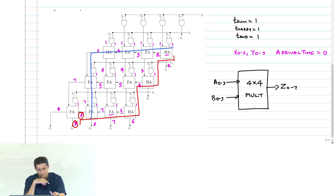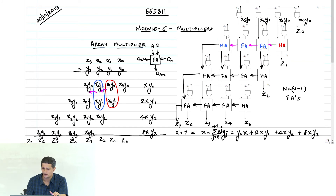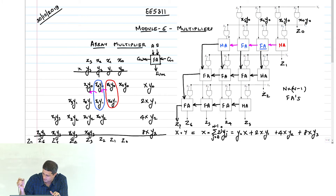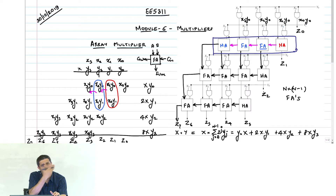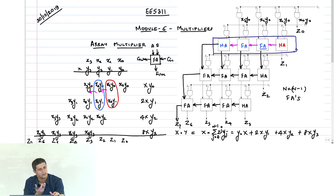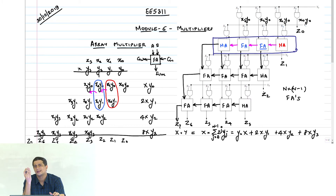If you take every single stage here, it is basically like a ripple adder — you are rippling the carry through that stage. Each row you are rippling the carry through that stage, which is really not helping. So now we come to what was pointed out: it is not necessary for you to ripple the carry along the same row.